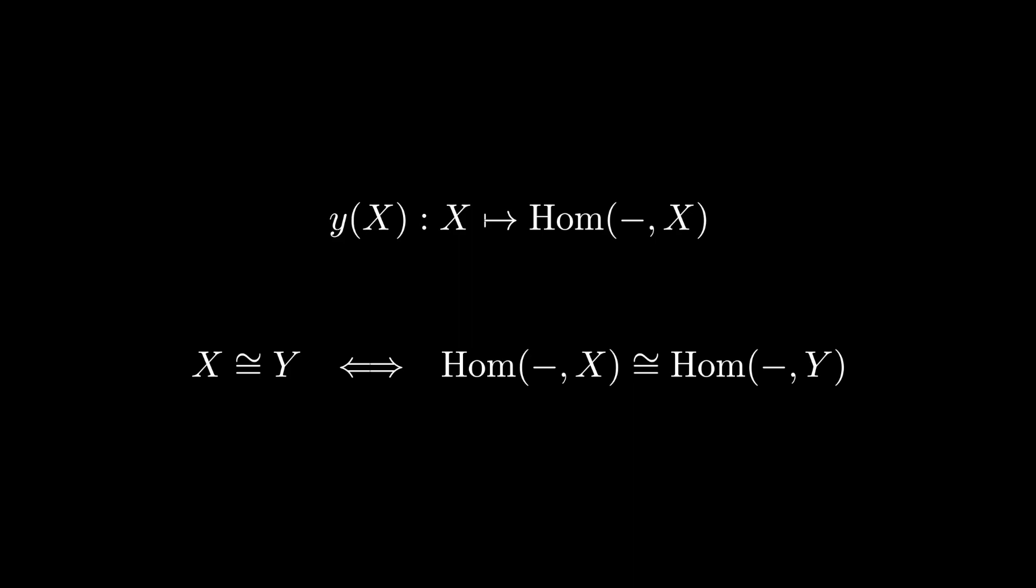X is isomorphic to another space Y if and only if Hom(−,X) is isomorphic as a functor to Hom(−,Y). This is one corollary of the Yoneda lemma. We'd also like this isomorphism to respect the morphisms about X. In this case, maps from X to Y correspond bijectively to maps from Hom(−,X) to Hom(−,Y). That is, since Hom(−,X) and Hom(−,Y) are functors, this is equivalently a bijection to natural transformations from Hom(−,X) to Hom(−,Y).